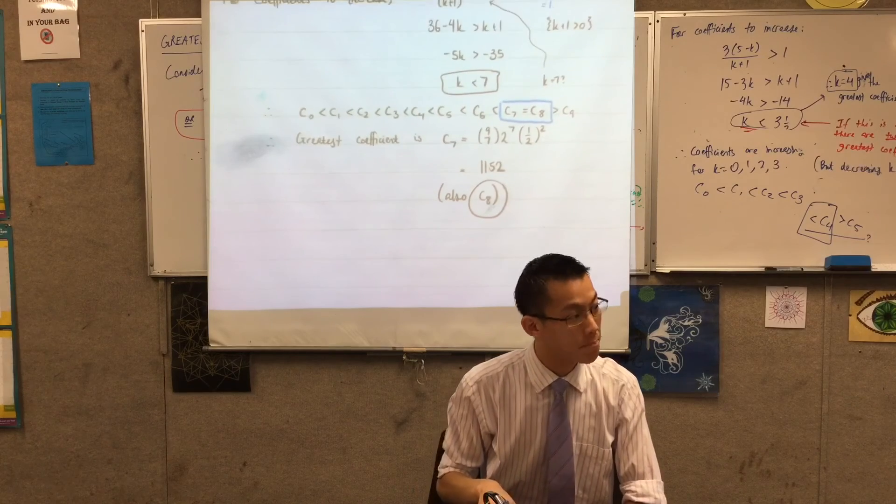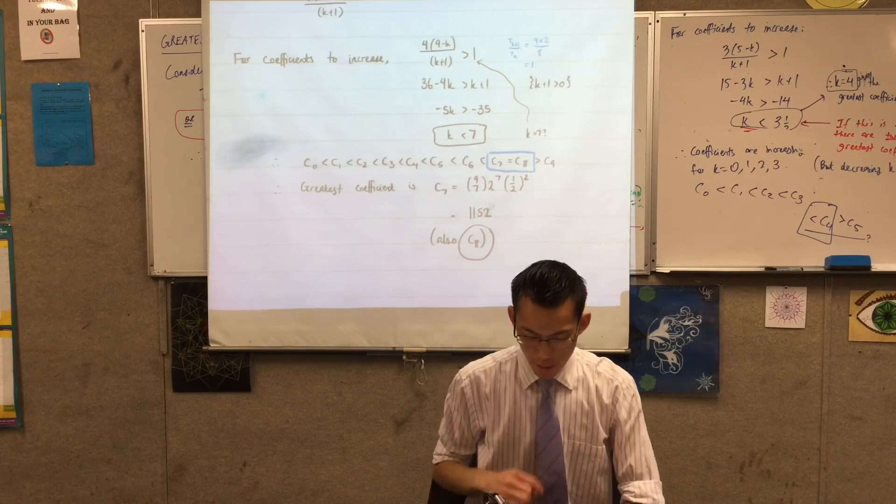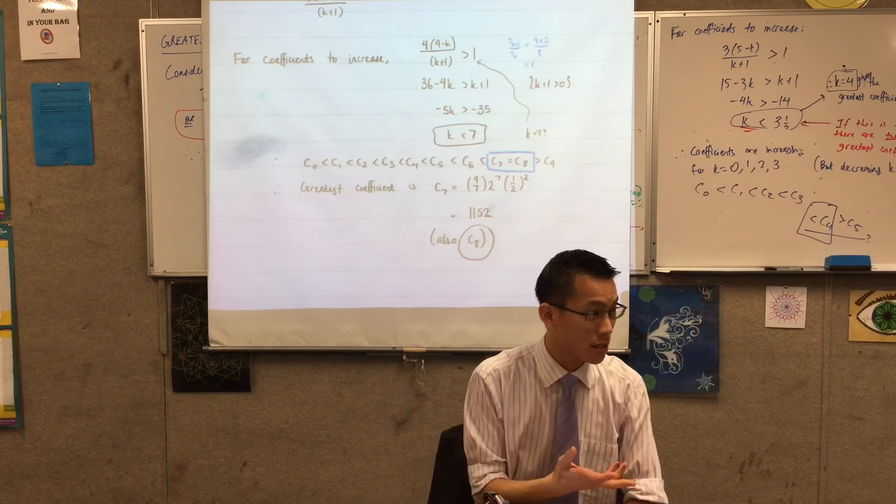Okay so why is it not c6 and c7? It's not c6 and c7 because k is less than seven right, so at value six it's still increasing.